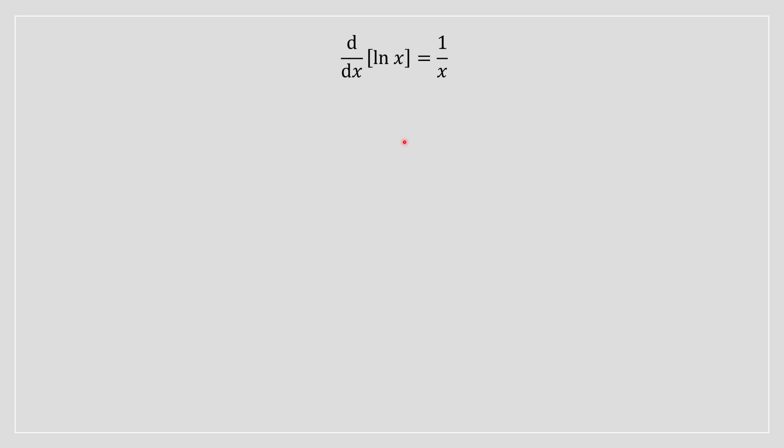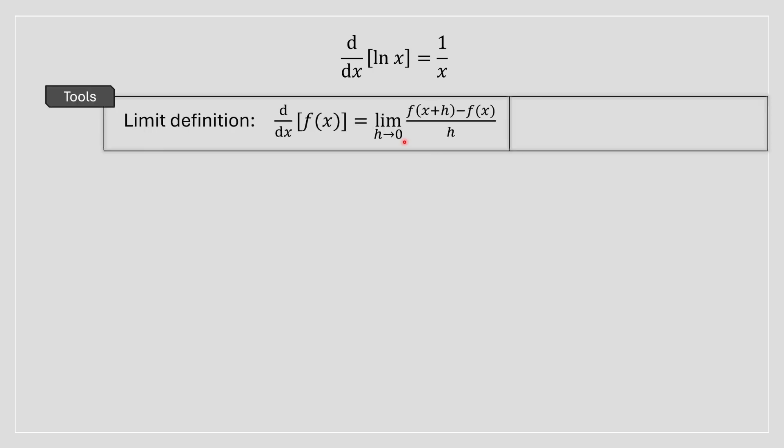First things first, you're going to need two important tools, two important formulas. The first one being the limit definition as always to prove a derivative. And the second one is Euler's number represented as a limit. So these two are very important.